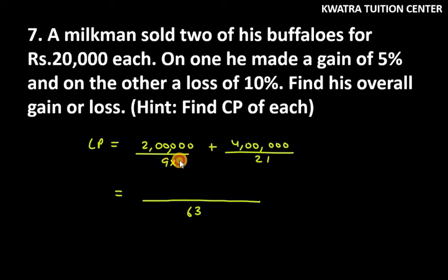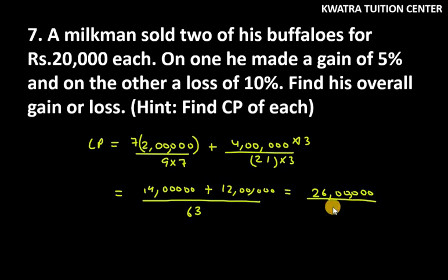Taking LCM of 9 and 21, which is 63. Multiply by 7, so this will be 14,00,000 plus multiply by 3, so this will be 12,00,000. 26,00,000 in total at numerator and denominator 63. So when you divide it, your answer is Rs. 41,269.84.